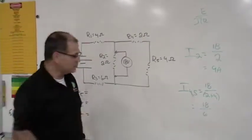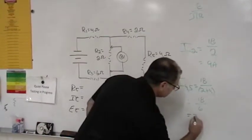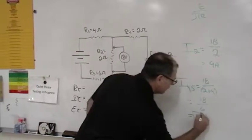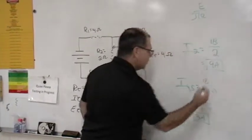So the current through 4 and 5 is what? 3 amps. 3 amps, right?